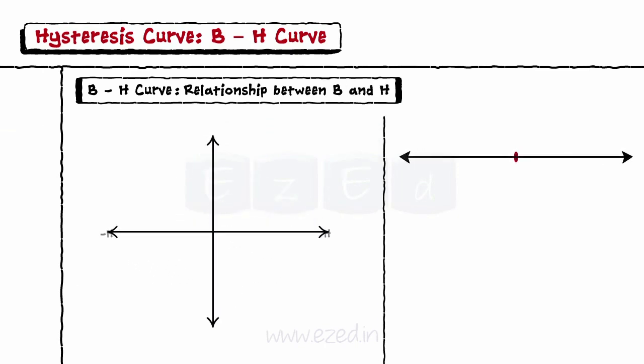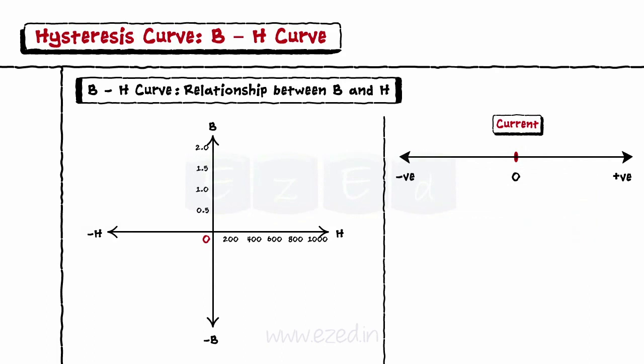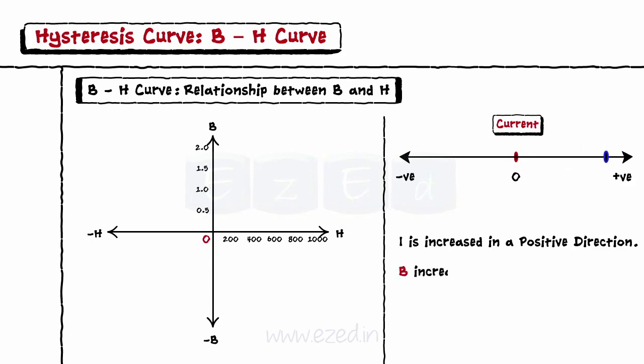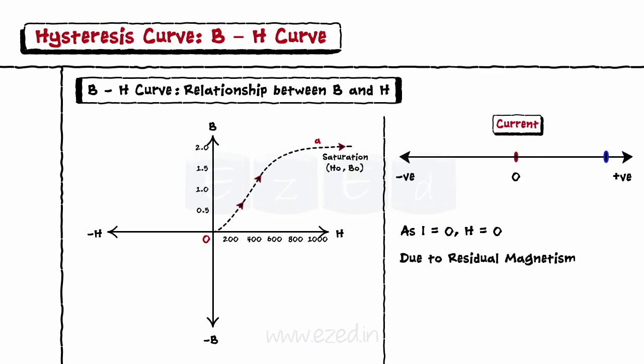Starting with an unmagnetized core, both B and H will be at 0.0 on the magnetization curve. If the magnetization current I is increased in a positive direction to some value, the flux density B increases linearly with the magnetic field strength H as shown by the curve from point 0 to point A as it heads towards saturation. At saturation, as the current in the coil reduces to zero, the magnetic field around the core also reduces to zero, but the magnetic flux does not reach zero due to residual magnetism present within the core, and this is shown on the curve from point A to point B.